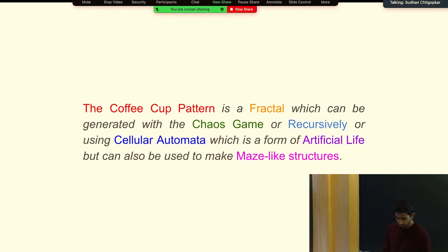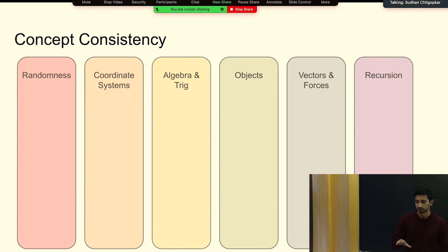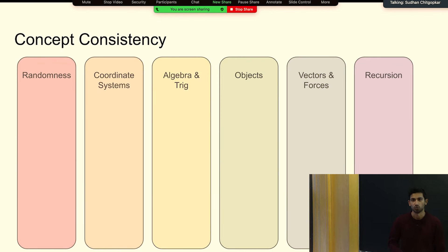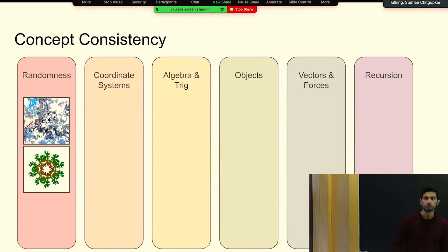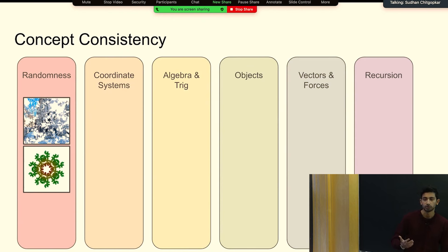At the heart of things were six different concepts. If you understand these six concepts, you have a very strong understanding of how to create pretty much any pattern you want. The first one is randomness. The first time we saw randomness was in our very first lecture when we talked about random walks, and then we saw randomness come up in our third lecture with the chaos game. We used randomness in lots of different places throughout the entirety of the course.